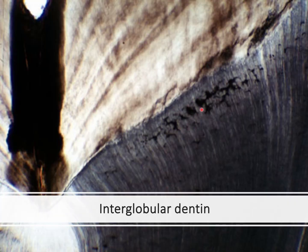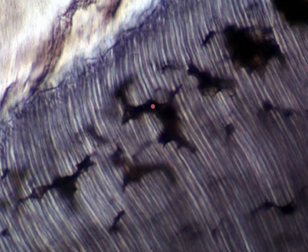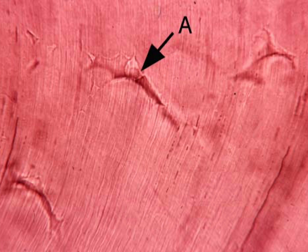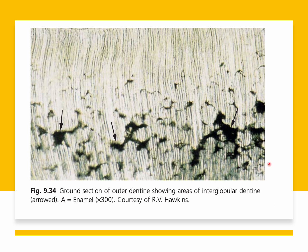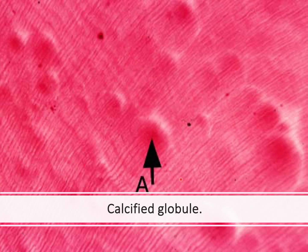At higher magnification you can see these are only failures of calcification. Remember that the dentinal tubules can pass through these areas without any problem — these are hypercalcified globular regions and they don't interrupt the tubule path. You can see how the tubules pass through these hypercalcified globules with no interruption. This slide shows how these globules look as they begin to calcify, and you can see the lines of the dentinal tubules running through them. Remember the name: interglobular dentine.